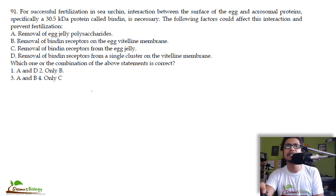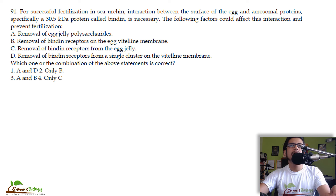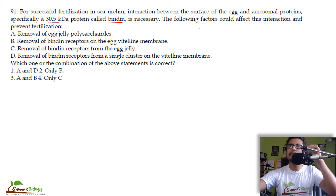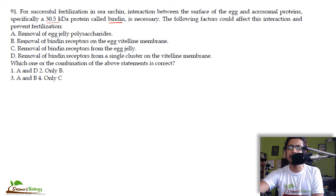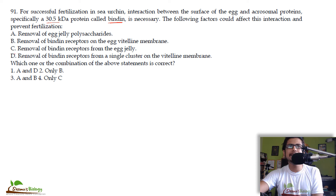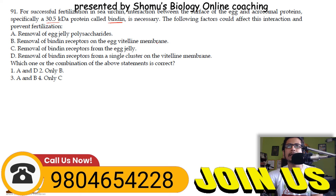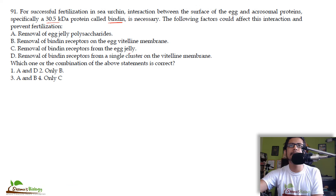Let's begin to see the degree of complexity in these questions. The first question: for successful fertilization in sea urchin, interaction between the surface of the egg and acrosomal protein — specifically a 30.5 kDa protein called 'bindin' — is necessary. The following factors could affect this interaction and prevent fertilization. Four statements are made and you need to find the correct combination.